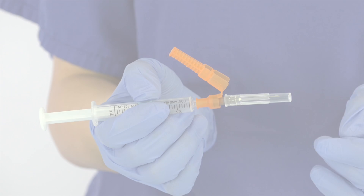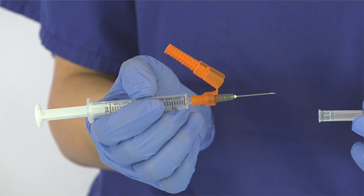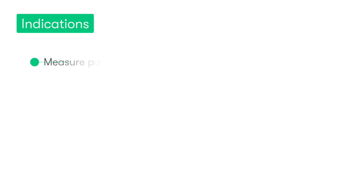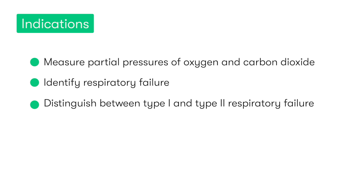The indications for performing an ABG are fairly extensive. However, in the acute setting, the main reasons include measuring the partial pressures of oxygen and carbon dioxide in the critically ill patient to identify the presence of respiratory failure. Additionally, it allows us to determine whether the patient has type 1 or type 2 respiratory failure.